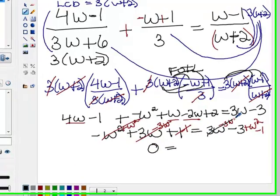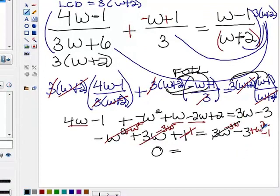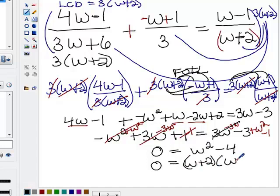On this side, notice the 3w's cancel. So I have my w squared, and the negative 3 and the negative 1 is negative 4. And now I can factor, and notice I have a difference of squares. This factors into w plus 2 times w minus 2.